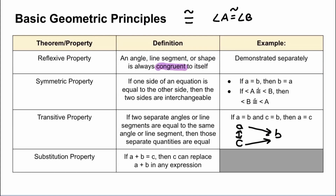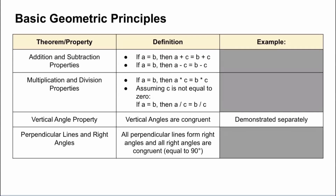The substitution property says that if A plus B is equal to C, then C can replace A plus B in any expression. You would normally take geometry right after Algebra 1, where this is a really common fundamental algebraic concept, especially when working with systems of equations. So I don't feel the need to show an example for that. Moving on to our addition and subtraction properties — another basic algebra concept where if you have an equation, adding or subtracting by the same value on both sides doesn't change the equality.